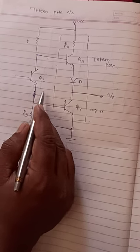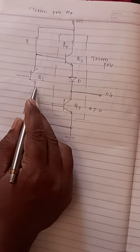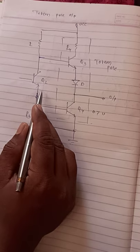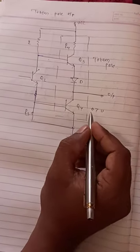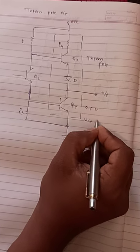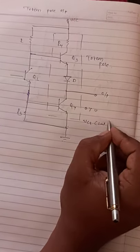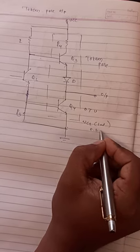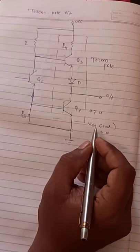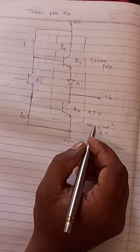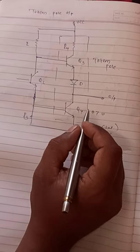When Q4 gets on then Q2 is also on. Therefore it is the collector to emitter voltage, that is the VCE saturation, that is 0.3 volt. Now the base voltage of Q3.